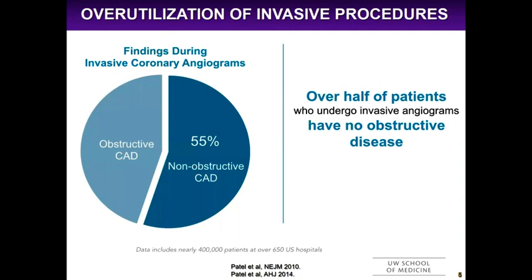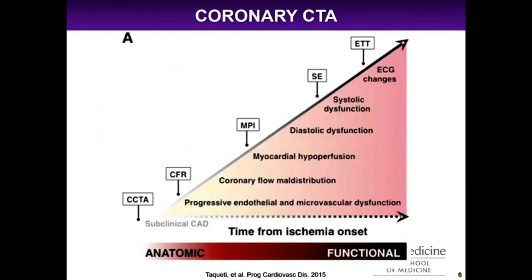Why is non-invasive testing so important? It's because of over-utilization of invasive procedures. The study by Patel in 2010 and also in 2014 showed that over half of patients who undergo invasive angiograms have no obstructive disease — 55% of those who get caths have no obstruction. Coronary CTA is one gatekeeper for this invasive test. On the ischemia cascade, coronary CTA is all the way to the left, meaning it detects subclinical CAD before any ischemia at all. FFR will detect ischemia, as will myocardial perfusion imaging with SPECT, then systolic dysfunction with stress echo, and finally exercise ECG.